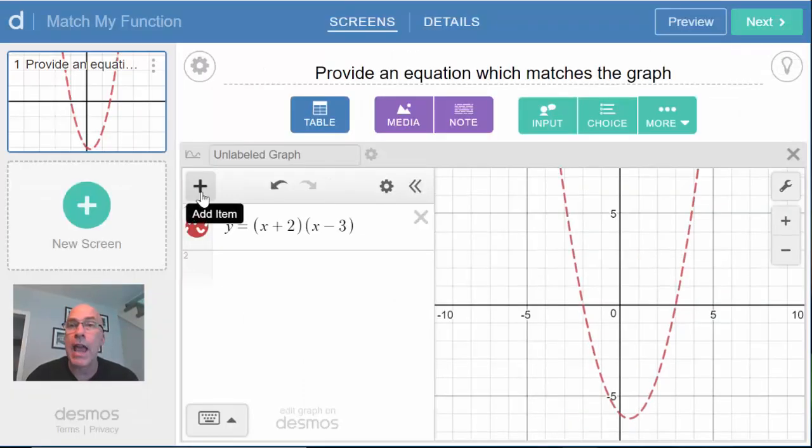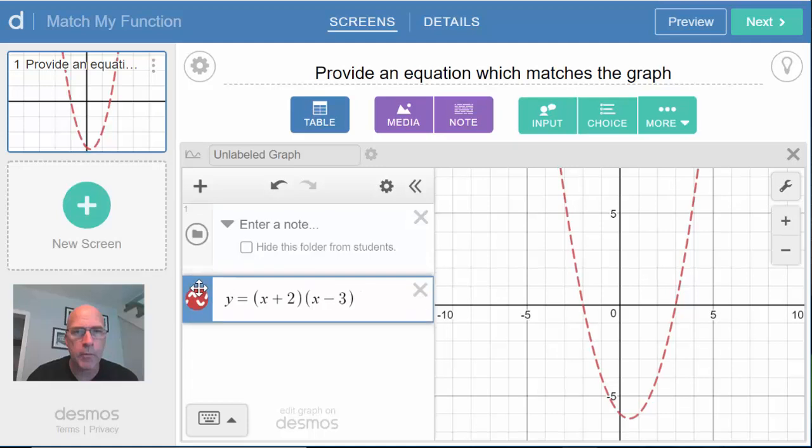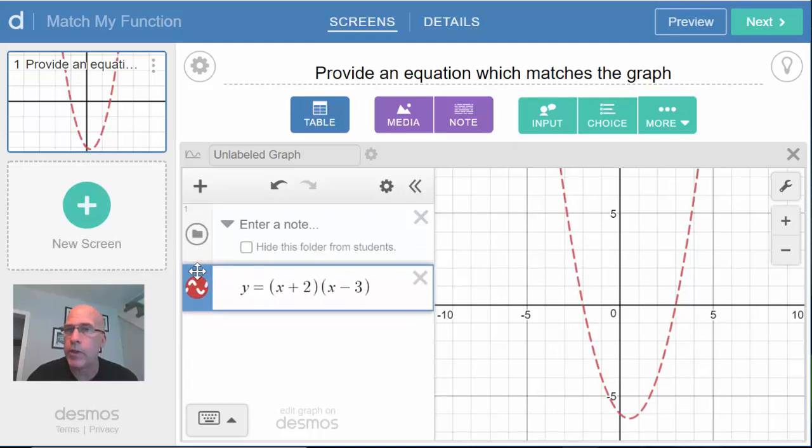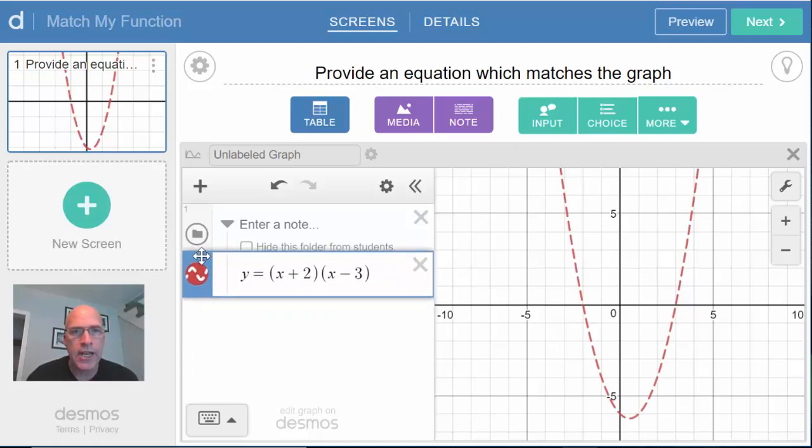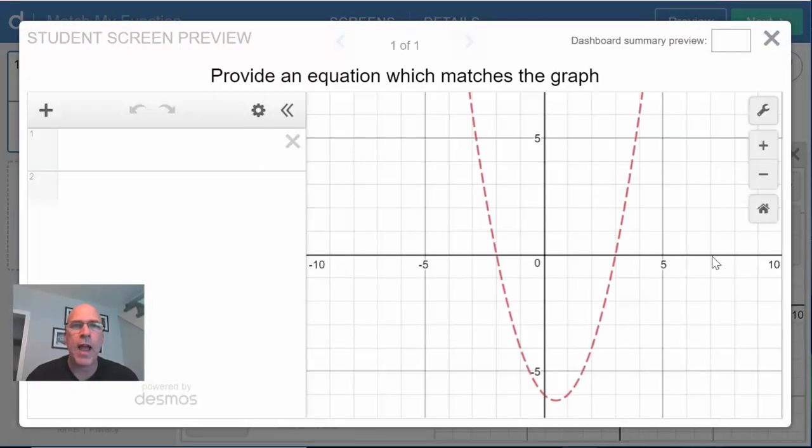If I do the plus sign here and add an item, we can add a folder. And I'm going to take this equation and drag it into the folder. There's a little bit of a learning curve here, but you drag the little side piece here where the color is located. And if you see the vertical line showing up, that means that that element is in the folder. So I'll put it in there. And there's this nifty little button here that hides this folder from students. I'm going to do that. And now if we preview it, provide an equation which matches the graph, now students have something they can attempt here.